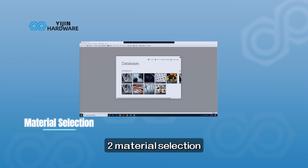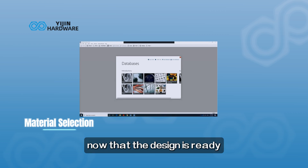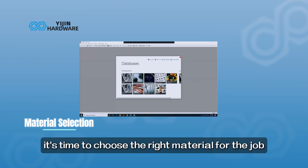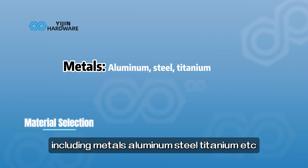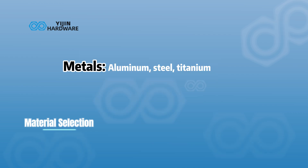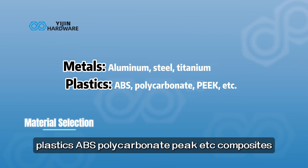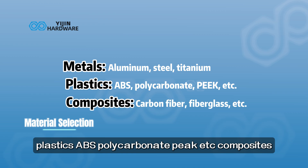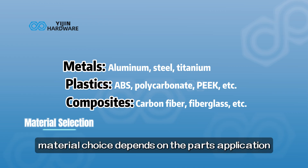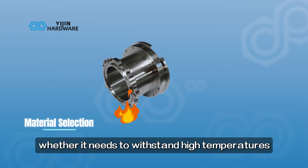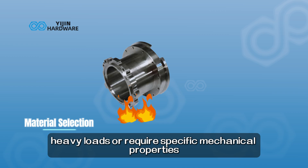Step two: material selection. Now that the design is ready, it's time to choose the right material for the job. CNC machining can work with a wide range of materials, including metals such as aluminum, steel, and titanium; plastics such as ABS, polycarbonate, and PEEK; and composites such as carbon fiber and fiberglass. Material choice depends on the part's application, whether it needs to withstand high temperatures, heavy loads, or requires specific mechanical properties.